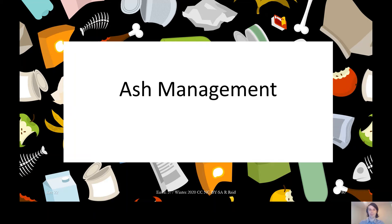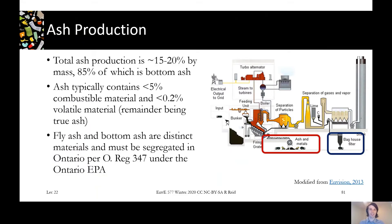Our final topic of thermal treatment and of the course as a whole is ash management. We looked at treating the gases coming out of our thermal treatment facilities, and now we'll look at treating the solids. Some of the solids came from the baghouse pulling out fly ash, and then we've also got the bottom ash to deal with. Ash production in general is about 15 to 20 percent of the mass coming in, and 85 percent of that comes out as bottom ash.